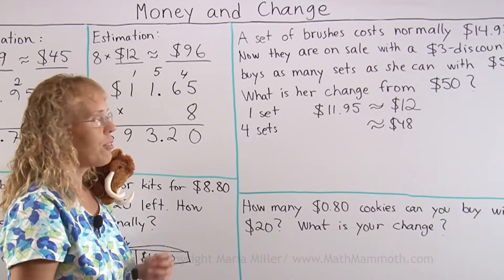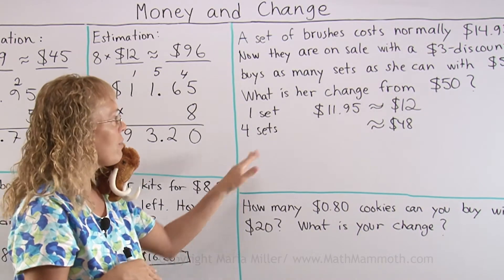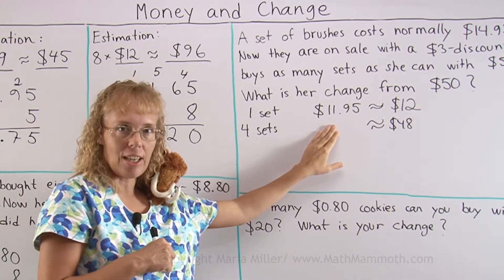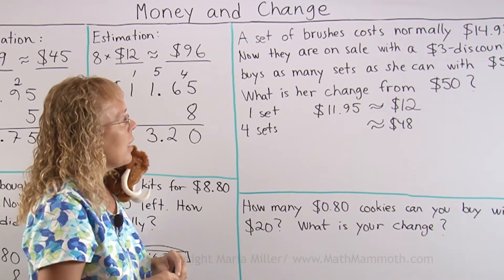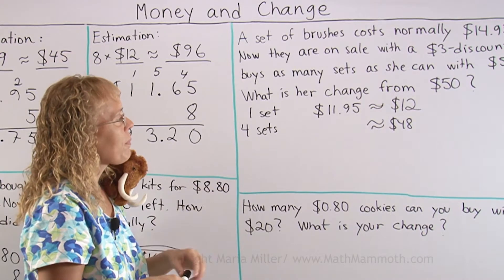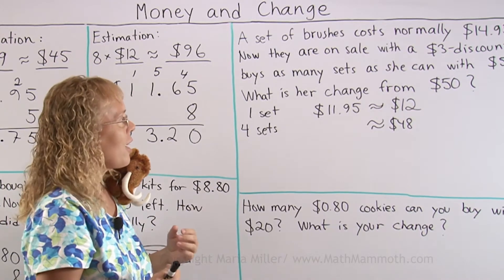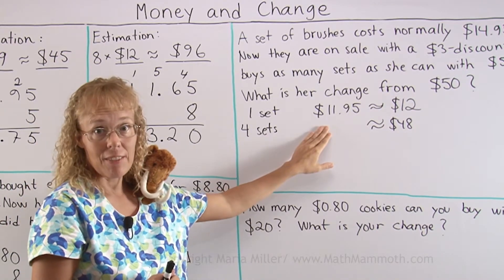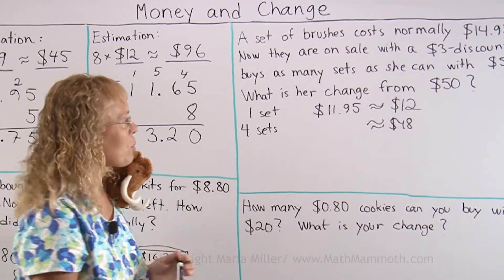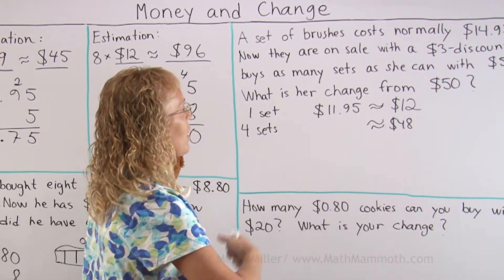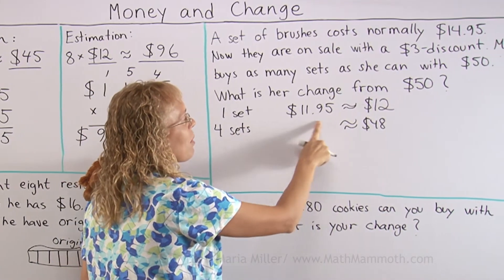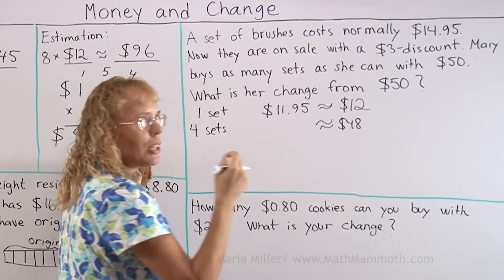Now we need to figure out the exact cost of four sets, because each one of them costs $11.95. You could multiply four times $11.95, but there's a quicker and easier mental math way. When I rounded this number, the difference between the real price and the rounded number is how much?